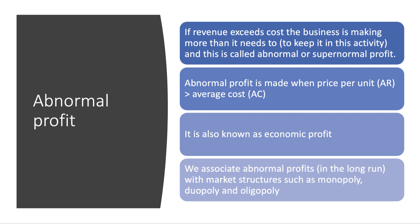Abnormal means better than normal. So if the revenue exceeds cost, the business is making in excess of what it needs to keep it in its current activity. We call it abnormal or super normal profit, and that happens when the price per unit is greater than the cost per unit. It's also known as economic profit. And typically, we associate abnormal profit with imperfect competition, such as monopoly, duopoly and oligopoly. In all three cases, businesses with market power are able to make abnormal profit in the long run.